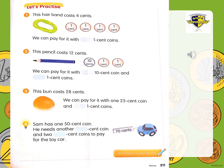Let's go on to the next one. This pencil costs 12 cents. What are the coins here which make 12 cents? The first one is a 10-cent coin, and then there are two 1-cent coins. So 10, 11, and 12 — it makes 12 cents. We can pay for it with one 10-cent coin and two 1-cent coins. Can you write for me in the blue box: one 10-cent coin and two 1-cent coins.